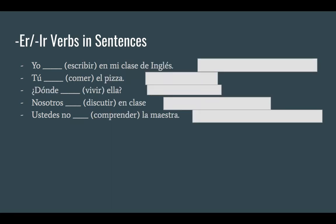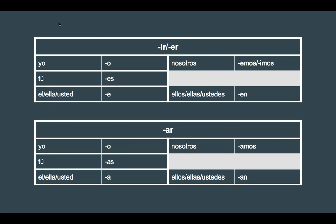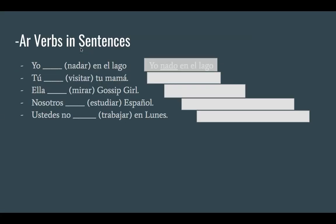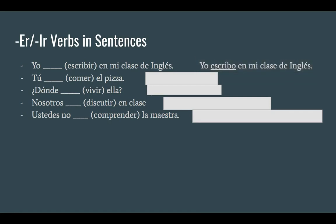Now for ER and IR verbs. We're going to conjugate 'escribir' in the yo form. Escribir minus the IR is 'escrib'. The ending for ER and IR verbs in the yo form is 'o'. So escrib plus o is 'escribo'. Yo escribo en mi clase de inglés — I write in my English class.